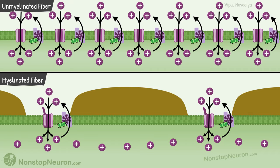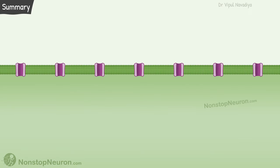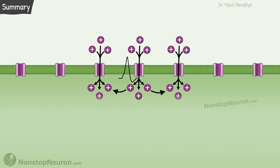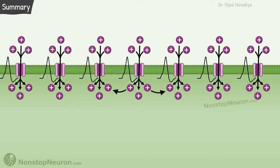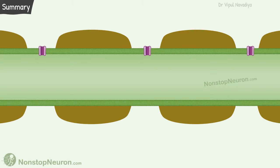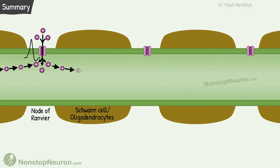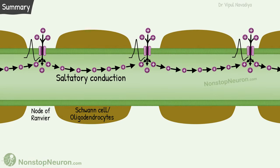So this was all about propagation of action potential. In summary: action potential in any region brings the voltage to threshold in the nearby region, so voltage-gated sodium channels open and action potential is generated there too, spreading in all directions away from the point of stimulus with its amplitude remaining the same. In myelinated fibers, the axon is insulated by Schwann cells or oligodendrocytes, with uncovered areas at regular intervals called nodes of Ranvier. In such fibers, the action potential jumps from node to node — called saltatory conduction — and it's fast and energy efficient.